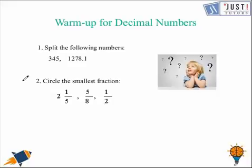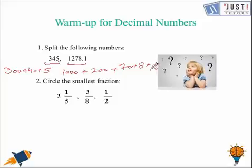Question number 1: Split the following numbers. The number says 345. So when we partition the number, the answer would be 300 plus 40 plus 5. Likewise, if we try to do that for the other number, which is actually a decimal number, 1,278.1, the answer would be 1000 add 200 add 70 add 8 plus 1 over 10.